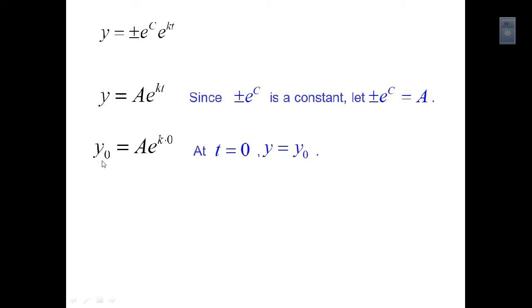To find what a actually is, we start with y at the beginning — the starting y₀ — which equals a times e to the k times 0. Since k times 0 is just 0, and e to the 0 is 1, we end up with a equal to y₀.